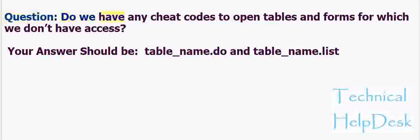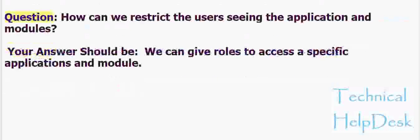Question: Do we have any shortcut codes to open tables and forms for which we don't have access? Your answer should be: use table_name.do and table_name.list. Question: How can we restrict users from seeing applications and modules? Your answer should be: we can assign roles to control access to specific applications and modules.